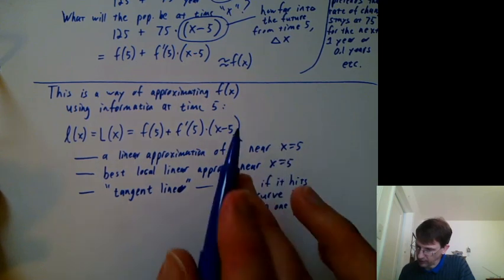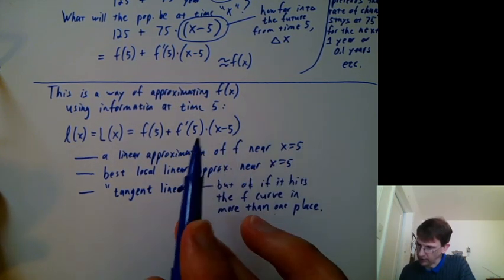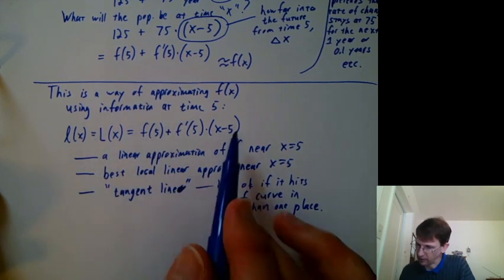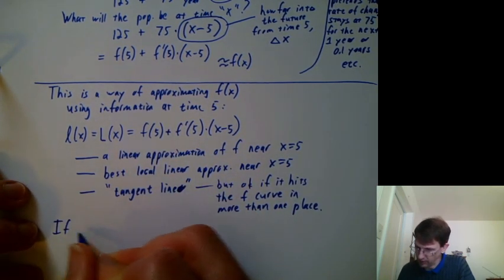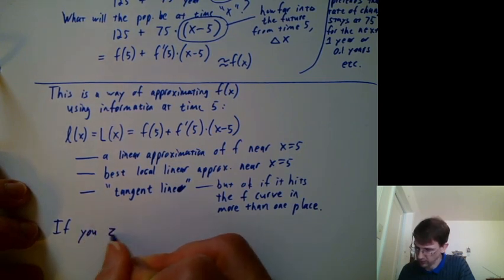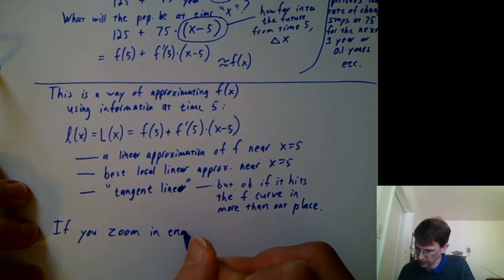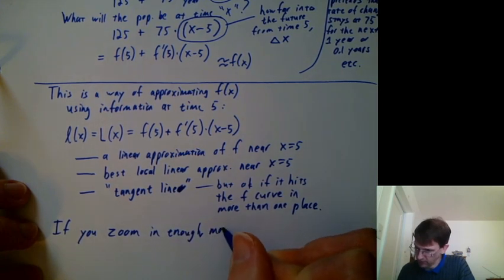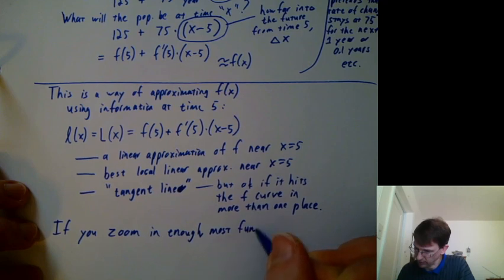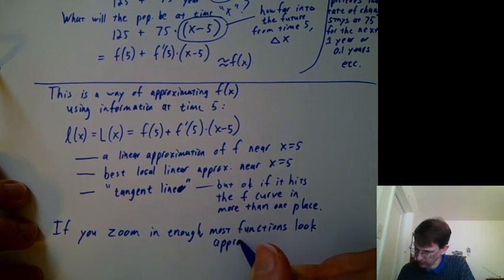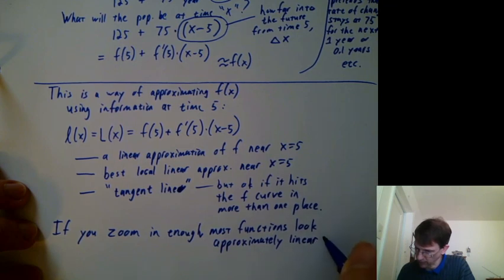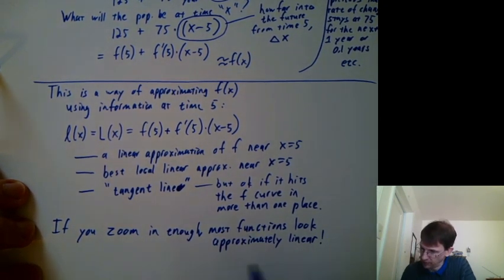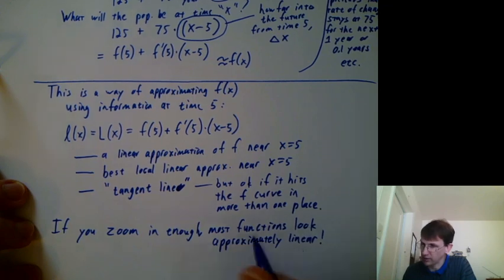Another way to say what we're saying here is that nearby any particular point, we can approximate with a tangent line, which is saying, if you zoom in enough, most functions look approximately linear. So that is one of the big lessons of Calc 1. If you zoom in enough, most functions can be well approximated by a line. And our next thing is going to be going and showing this in Desmos. We'll see you next time.